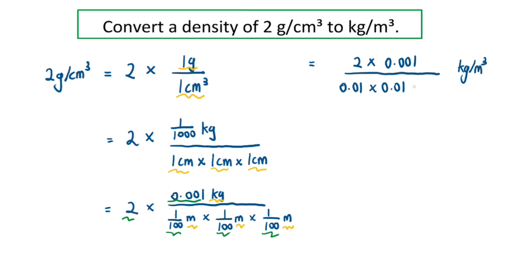Next, we are just going to use the calculator to calculate 2 × 0.001 divided by 0.01 × 0.01 × 0.01, and we should get 2000, and the units will be kg per m³.